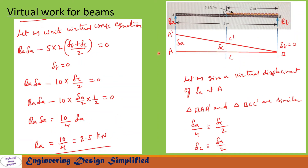To find reaction at A (R_A), let us give a virtual displacement of delta_A at A. The beam will assume position B, C prime and A prime. We again have two similar triangles: BC-C prime and BA-A prime. From these triangles: delta_A / 4 = delta_C / 2, so delta_C = delta_A / 2. At this end, delta_B = 0.